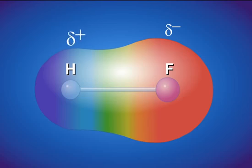A polar covalent bond can be thought of as an intermediate between a nonpolar covalent bond and an ionic bond.